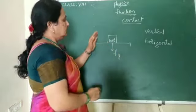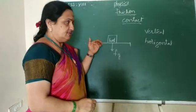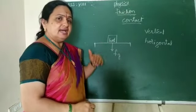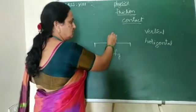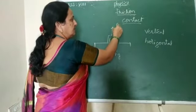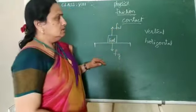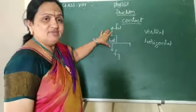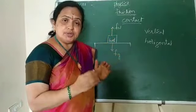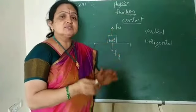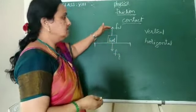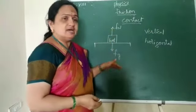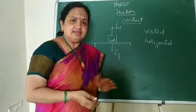We know that whatever the object, whether it is in motion or at rest, there will exist a normal force in the upward direction. When these two forces have the same magnitude — meaning the same quantity — but are in opposite directions, the forces are mathematically going to be cancelled.